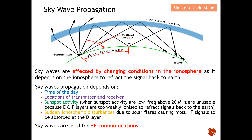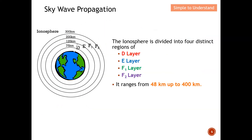Sudden ionosphere disturbance due to solar flares causes most HF (high frequency) signals to be absorbed at the D layer. Sky waves are typically used for HF high frequency communication. The ionosphere is divided into four distinct regions: the D layer, which is nearest to the earth, the E layer, and the F1 and F2 layers, with altitudes ranging from 48 kilometers up to 400 kilometers.